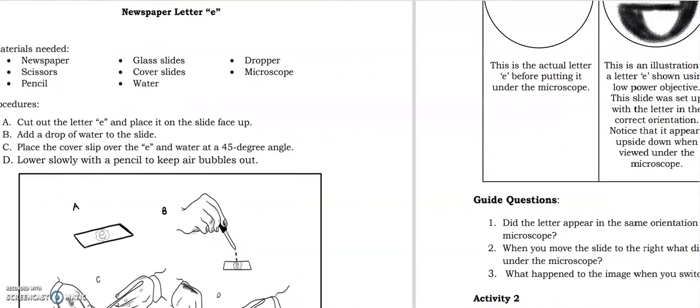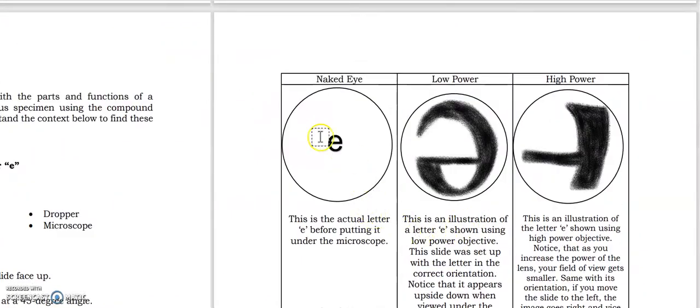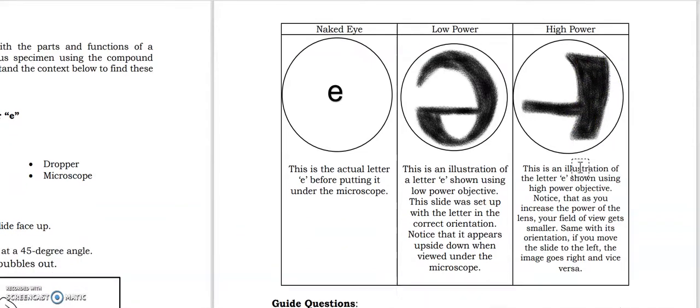So that's letter E. Okay, so under the microscope, this is actually letter E cut out from the newspaper, for example. And under the microscope, using the low power objective, this is the view of this letter E. And using the high power objective, this is the view, because it's only a portion of the letter E that can be seen using the high power objective.